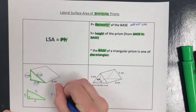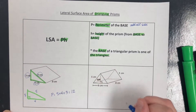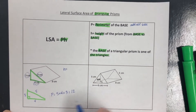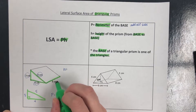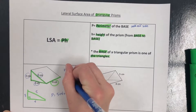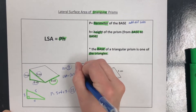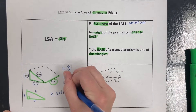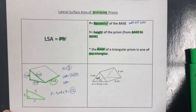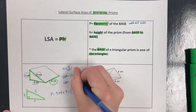For perimeter, we just add up all the sides: 5 plus 4 plus 3 gives us 12. And then H is still the height of the prism from base to base — from triangle to triangle — which is 8. So lateral surface area is the perimeter, 12, times the height of the prism, 8. Type that into your calculator and you should get 96 centimeters squared.